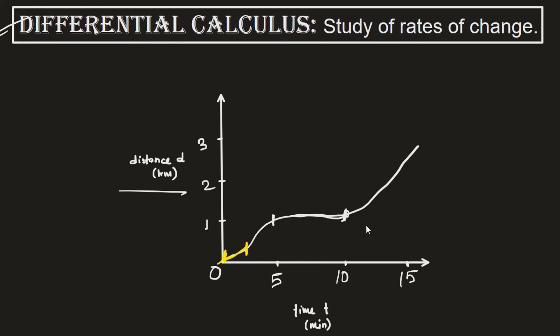Again, for another time interval between two points, the progress can be mapped within one straight line where your speed was comparatively a bit higher. Another straight line could be drawn where your speed started slowing down. On the window where you had no progress at all, the progress can be mapped with a flat straight line.